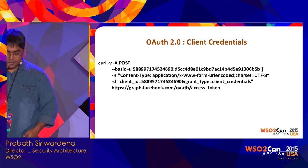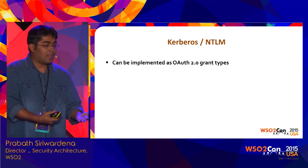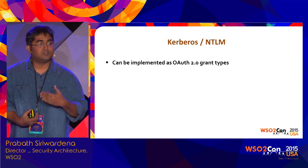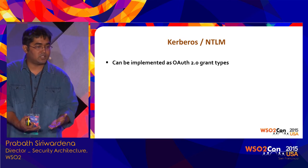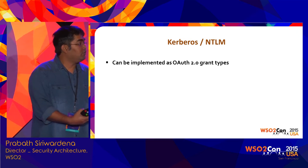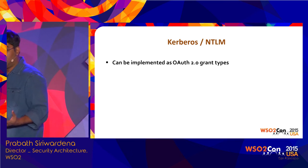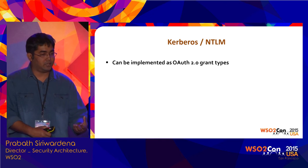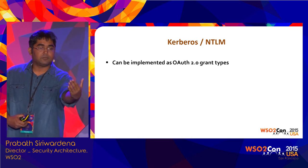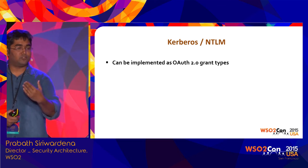One of our clients had a requirement where you log into your Windows domain and have a web app, and you want to access APIs without further providing any credentials, because you already authenticated to the system — that's through Kerberos. You should be able to exchange this Kerberos token to get an access token. This is the beauty of the OAuth specification: you can extend it. We wrote a Kerberos NTLM grant type to support that — you pass the Kerberos ticket, validate it, and get back the access token.